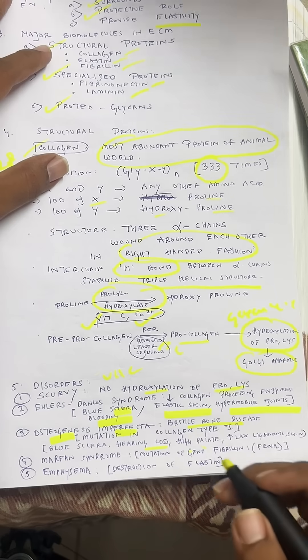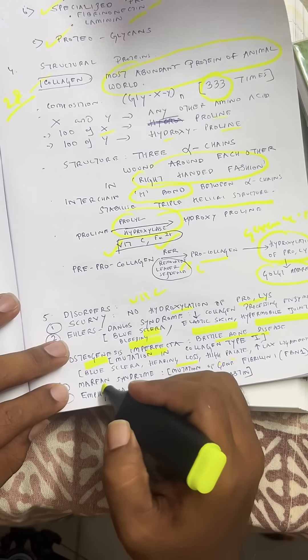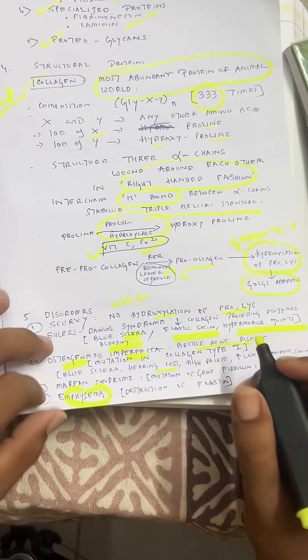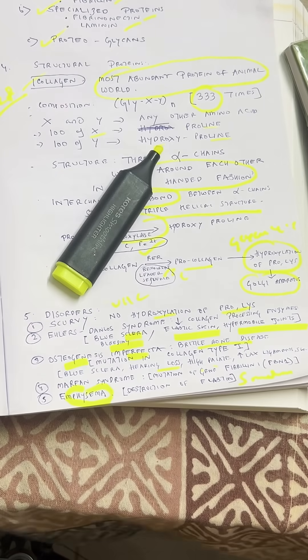Marfan syndrome patients tend to be very tall. Disorders of elastin metabolism include emphysema, which occurs very often in smokers.